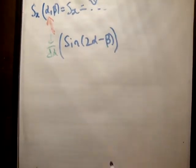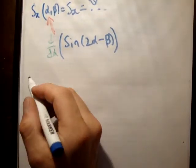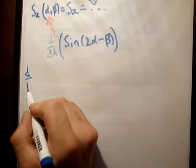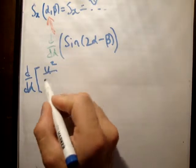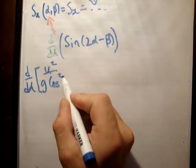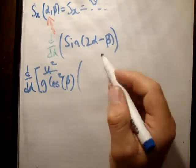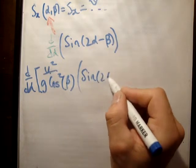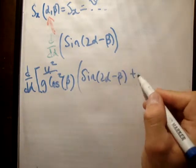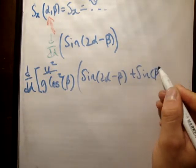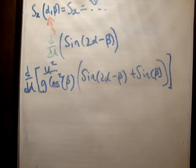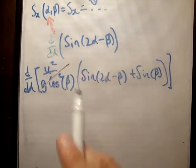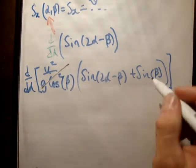Now just in case I confused anybody, if you do this, you'll get the same answer as if you do this. Differentiate with respect to alpha of U squared over G cos squared beta, times sine 2 alpha minus beta, plus sine beta. You'll get the same answer. The reason you'll get the same answer, because we are differentiating with respect to alpha. So this won't affect this, that will just go to zero, and so will this.